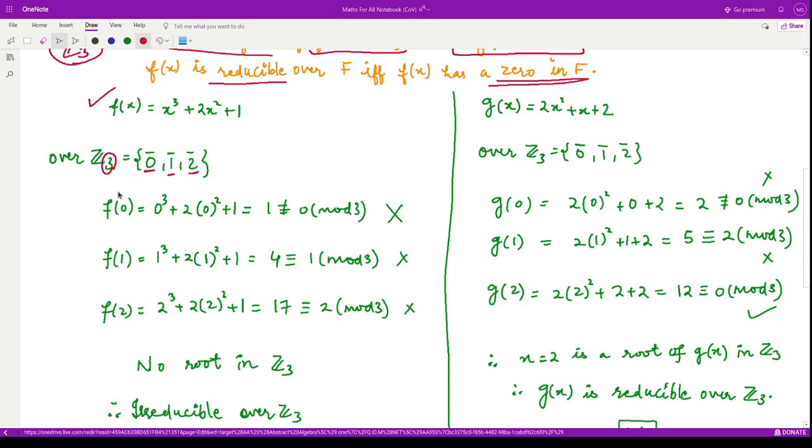So, let us check each one by one. When you put 0 into this polynomial, you will get f(0) as 0³ + 2·0² + 1 which comes out to be 1 and which is not equal to 0 mod 3. So, this is not a root. Again, f(1), it comes out to be 4. When you divide this 4 by 3, you will get the remainder as 1. So, it is 1 mod 3. So, this is also not a root because now we are in Z₃. So, we have to apply this operation of mod 3. Then f(2) would be 2³ + 2·2² + 1 which is 17, which when you divide 17 by 3, you will get the remainder as 2. Therefore, this is also not 0 mod 3.